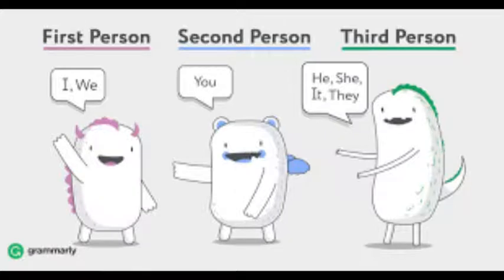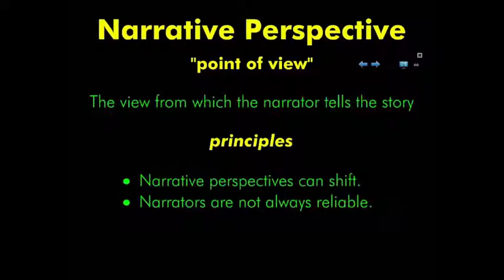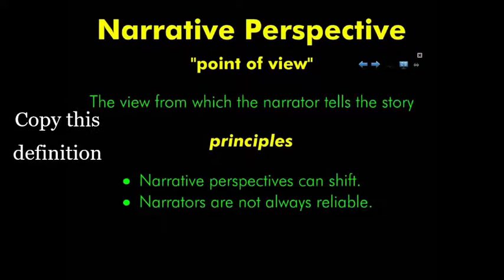Talking about something from the outside. The easiest way to remember it is: first person shooter games are games where you see through the eyes of your character, and third person platformers are when you can see the entire body of the character from the outside — it's about moving a little bit further away from the character. So, narrative perspective is point of view — the view from which the narrator tells the story. The main two principles are that narrative perspectives can shift, and that narrators are not always reliable. Just pause the video and jot this slide down.